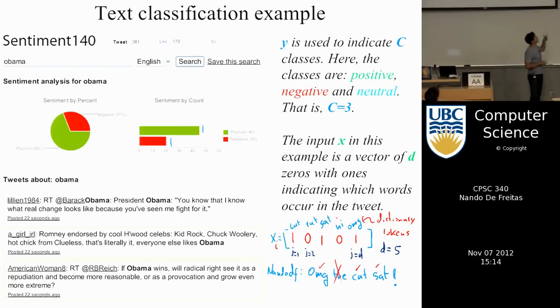In fact, there's a particular site called Sentiment140, which you can go to this site and you can type any term. And the way it works is like you go to the site, you type Obama, it then extracts a bunch of all the recent tweets about Obama, and then it applies the classifier to each tweet.